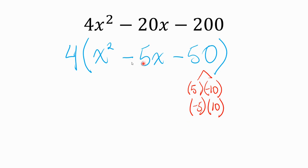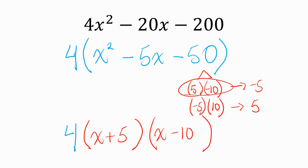Which ones add up to negative 5x? These ones add up to negative 5. These ones add up to positive 5. So I want these ones. My 4 stayed out front, and my factors are 5 and negative 10. So it's 4(x + 5)(x - 10). Here is my factored form.